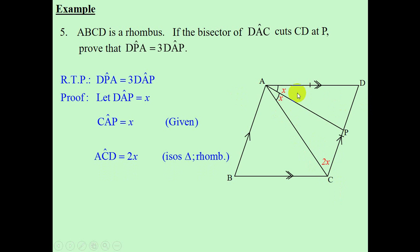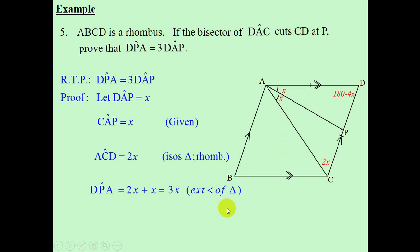Now we want to find angle DPA. Angle DPA is an exterior angle of triangle ACP. So we can conclude that angle DPA is equal to 3X. Another way to do it — which is more complicated — is to use triangle ACD, which gives 180 minus 4X using angles of a triangle, and then find angle DPA using 180 minus X minus (180 minus 4X). That's quite intense. So I advise you to go with DPA equal to 3X, and your reason is exterior angle of triangle ACP. Thank you.